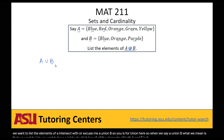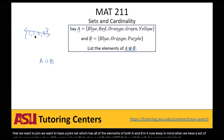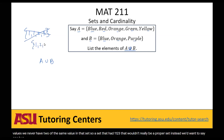Keep in mind, when we have a set of values, we never have two of the same value in that set. So a set that had one, one, two, three — that wouldn't really be a proper set. Instead we'd want to say one, two, and three. We wouldn't want to have a repeating one in there.